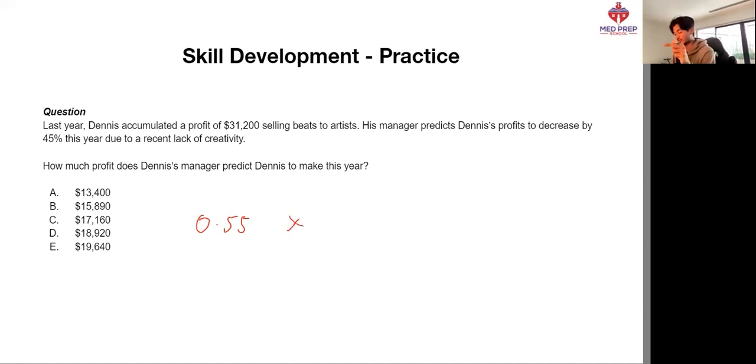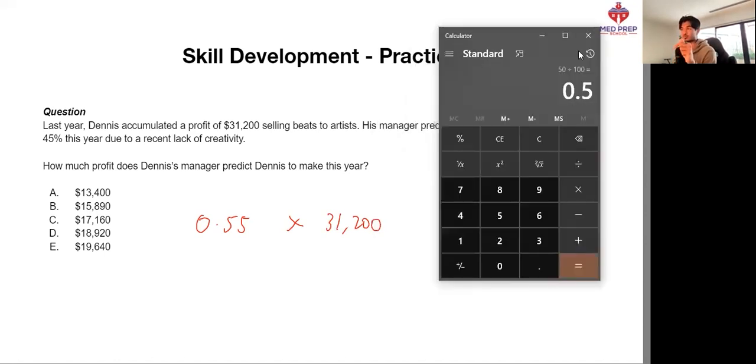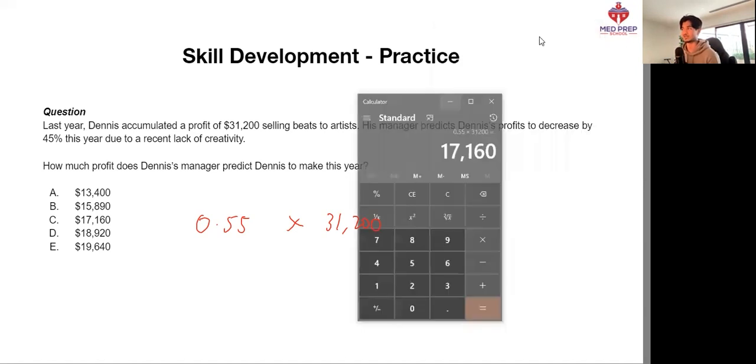In other words, 0.55 times 31,200. So then, if we simply pull up our calculator again. Calculator is your best friend in QR. 31,200. We get our answer of 17,160. Our answer here is, in fact, C.